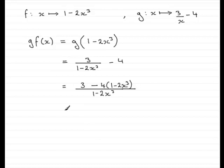Now, all I need to do is expand the bracket. So we have 3 minus 4 and then plus 8x cubed. And that's all divided by 1 minus 2x cubed.